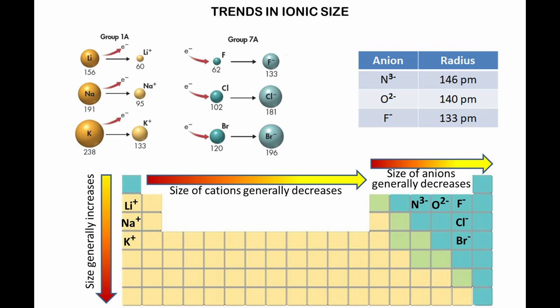What are the trends in ionization energy? First, cations. When an atom loses an electron, the attraction between the remaining electrons in the nucleus increases. So the electrons are drawn closer to the nucleus. So a positive ion, or cation, is smaller than the atom from which it was formed.